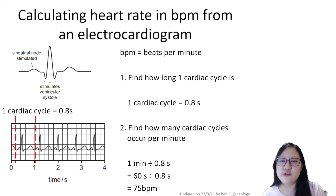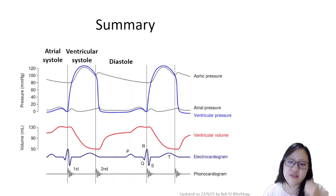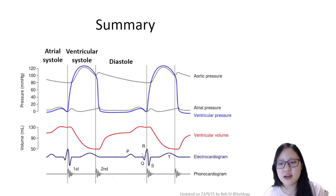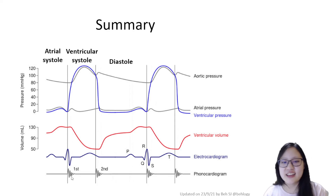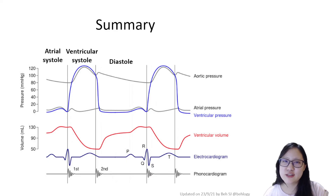And we are done with Chapter 8. Here is a summary of the graphs we have learned: the pressures in the heart, the ventricular volume, the electrocardiogram lined up with the cardiac cycle graph, and the phonocardiogram, which measures heart sounds. The first sound is determined by the AV valve closing, and the second sound is caused by the semilunar valve closing. That's it for the cardiac cycle — I hope you learned something.